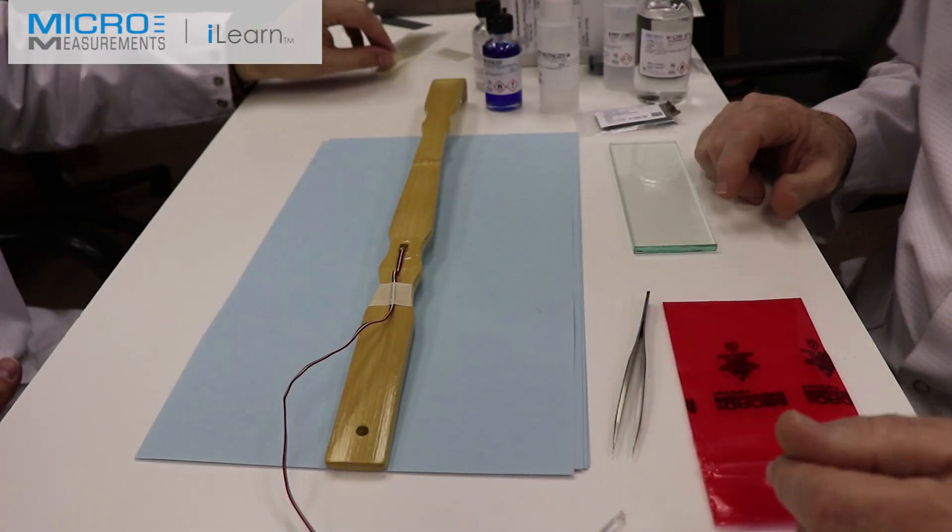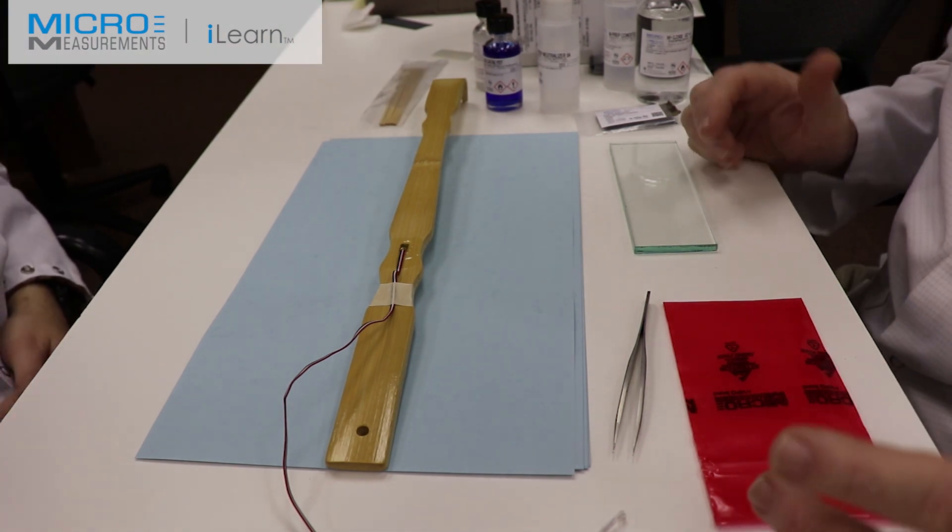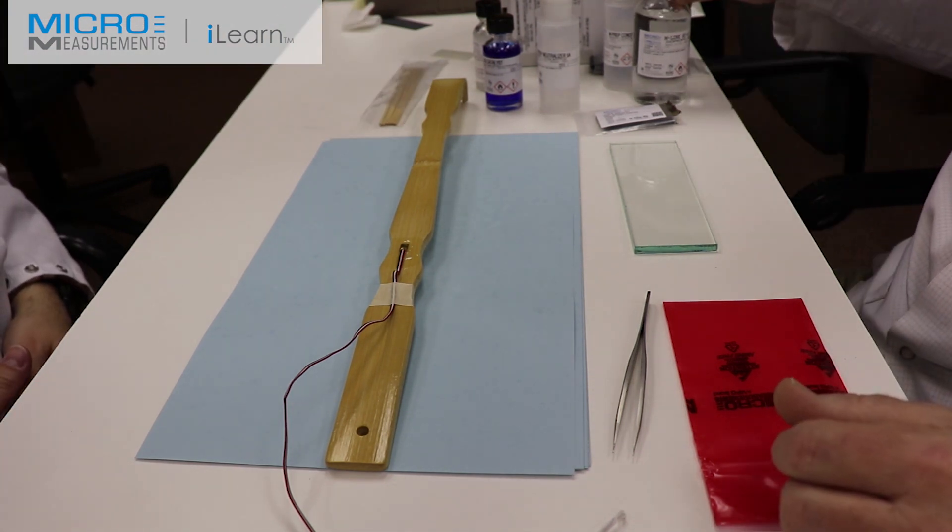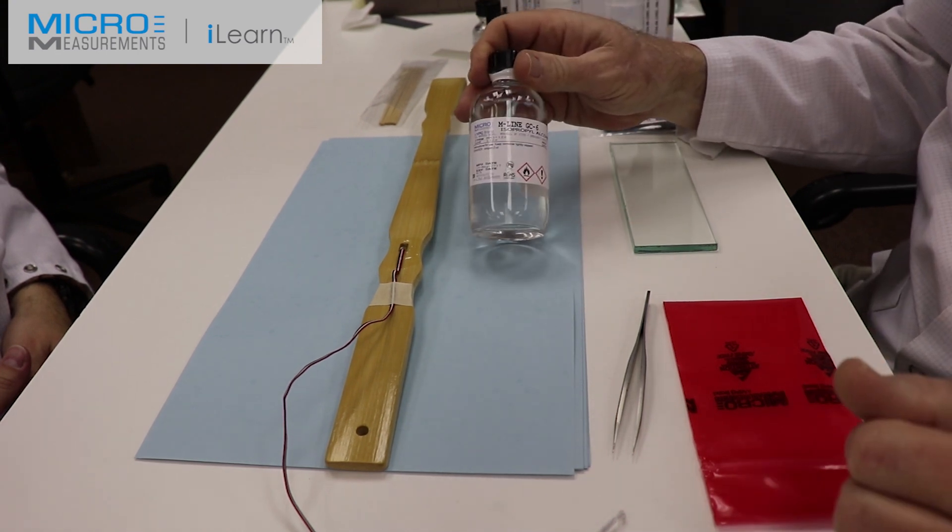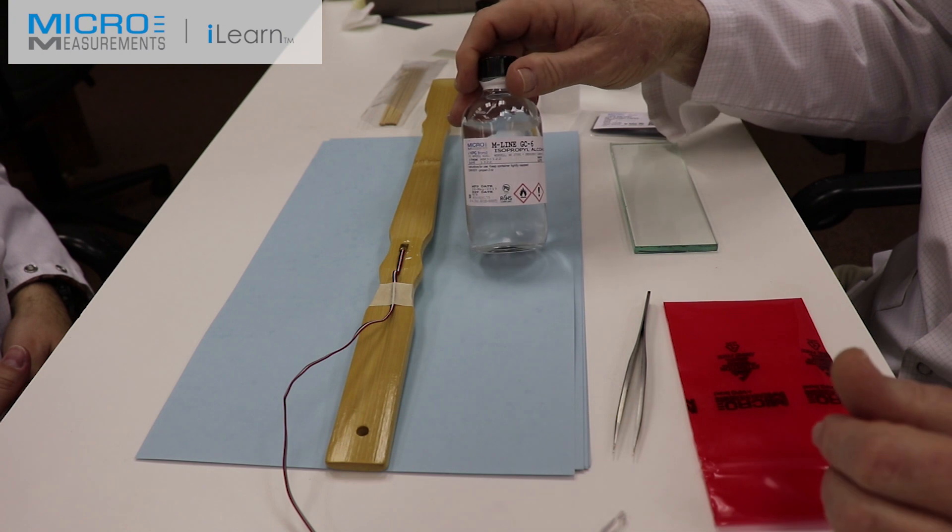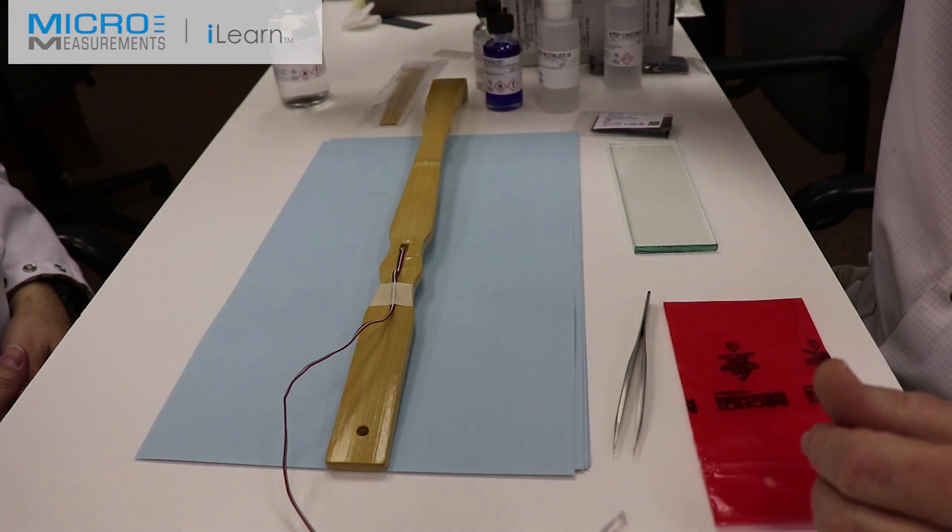While we're waiting for the protective coating to cure, let's have a review of the materials we used during this project. The first thing was the GC6, the degreaser. This is a benign degreaser, 99.95% pure isopropyl alcohol.